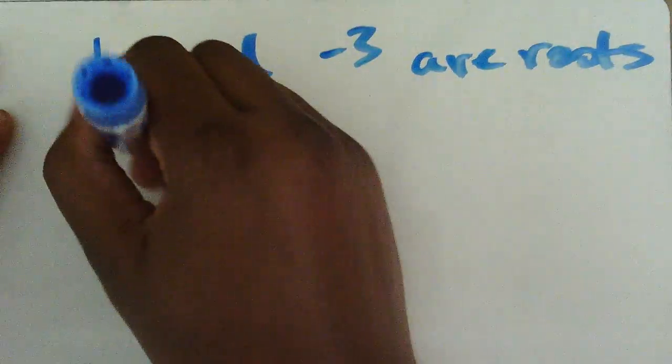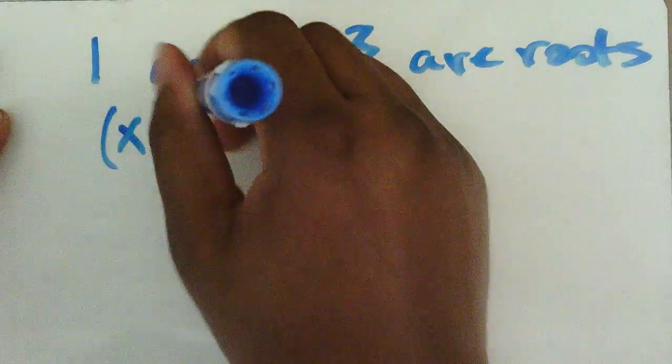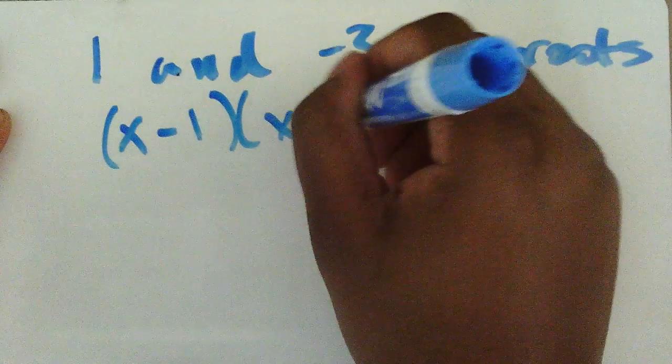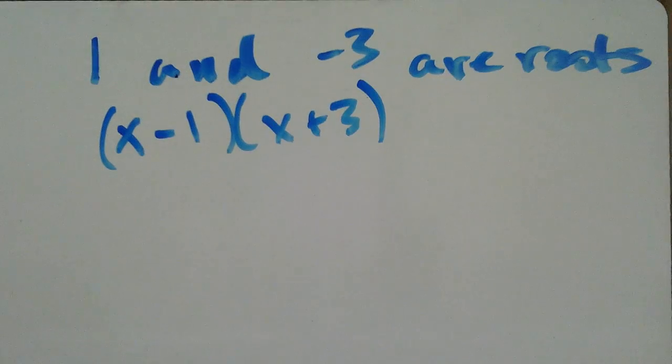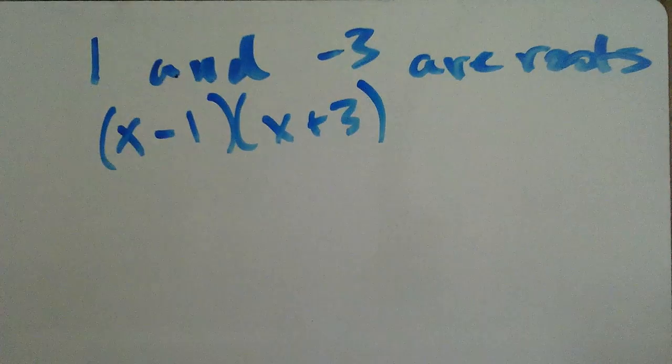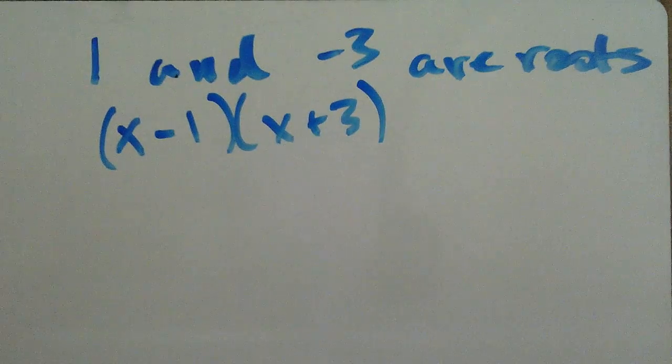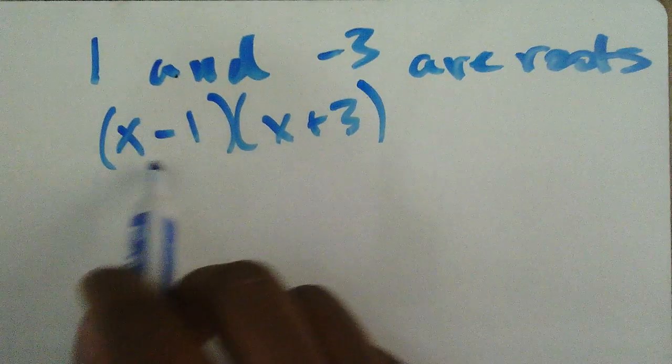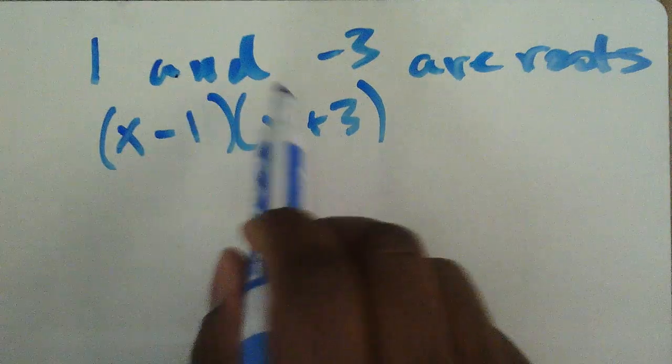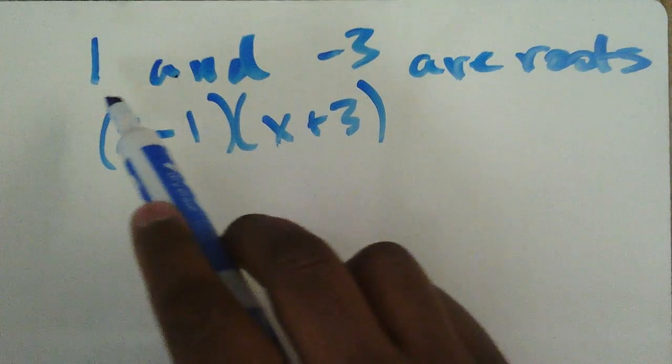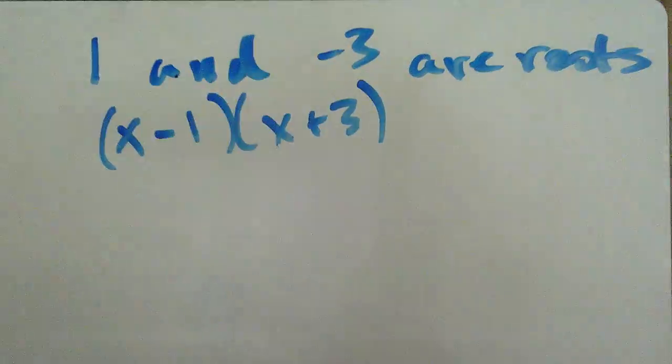Well, that means that x minus one and x plus three must be factors of your quadratic, right? Because if I put one in here, that makes this a zero. If I put negative three in here, that makes a zero. Notice that the factors are the opposite signs of the roots.